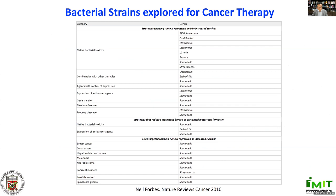This table demonstrates bacterial strains that have been employed for cancer therapeutic research. Those are Bifidobacterium, Clostridium, E. coli, Listeria, Salmonella, and Streptococcus. In the different category for preclinical application, Salmonella has been overwhelmingly the most studied.